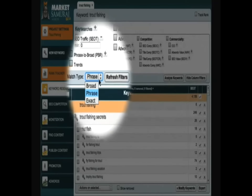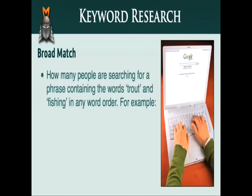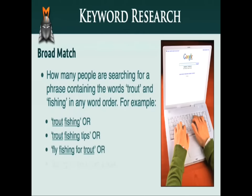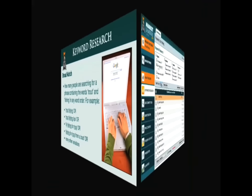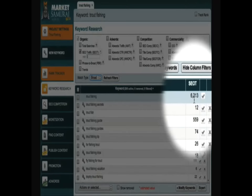Now finally, let's take a look at the broad match type. The SEO traffic figure relates to how many people are searching for a phrase containing the words Trout and Fishing in any word order along with additional words. This would include phrases such as Trout Fishing, Trout Fishing Tips, Fly Fishing for Trout, or Fishing for Trout from a Boat and many other variations. The two words Trout and Fishing do not have to be in the right order. So with the match type set to broad, I can see that 6,213 people per day are searching for a phrase that contains the words Trout and Fishing in any order along with other keywords.